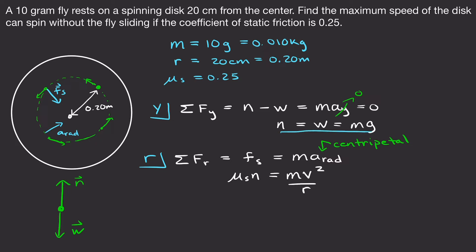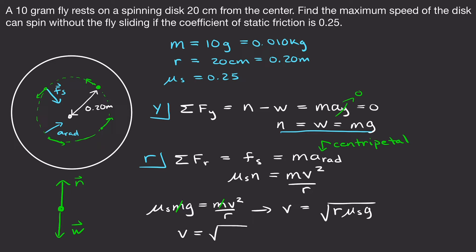The normal force equals mg from the vertical equation. So μs times mg equals m times V squared over R. Mass cancels. Solving for velocity: V equals the square root of R times μs times g. Plugging in: square root of 0.2 meters times 0.25 times 9.8 m/s² gives 0.7 meters per second. As it turns out, the mass of the fly didn't matter — it canceled out.